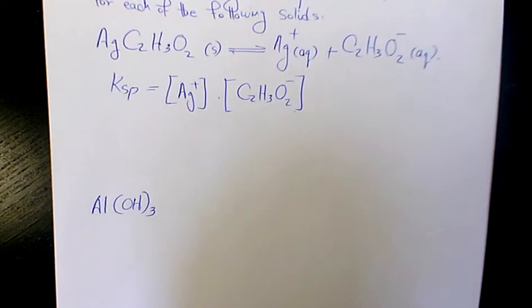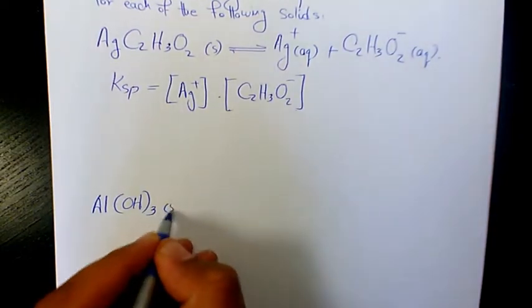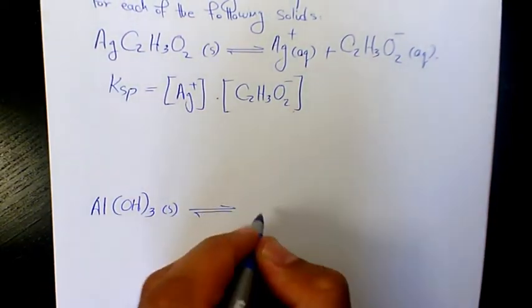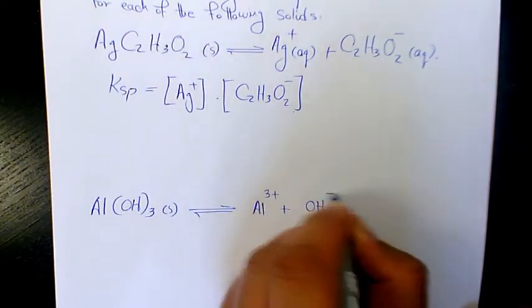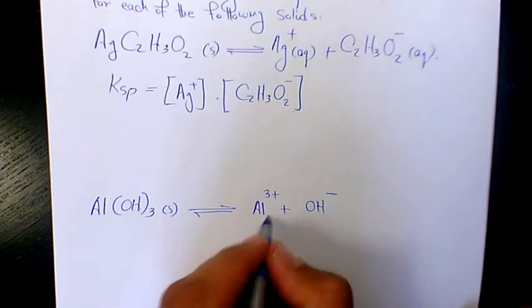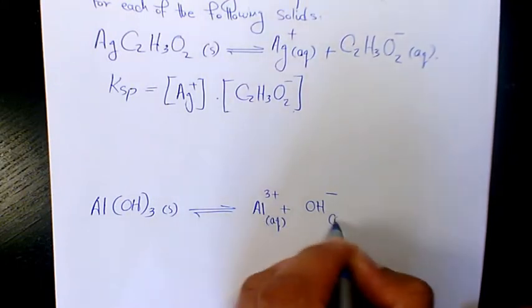Next one is Al(OH)3. In solid form, when it dissolves, it's going to produce Al3+ plus hydroxide minus aqueous phase.